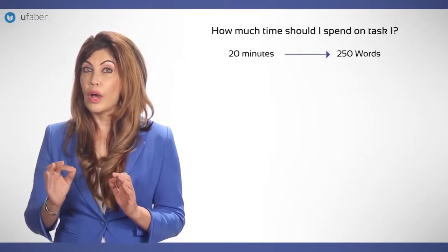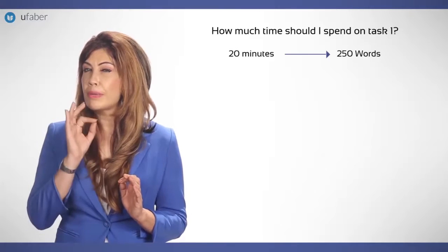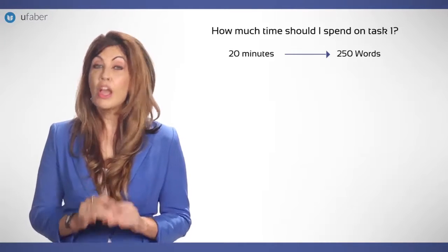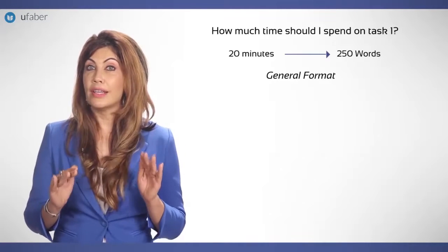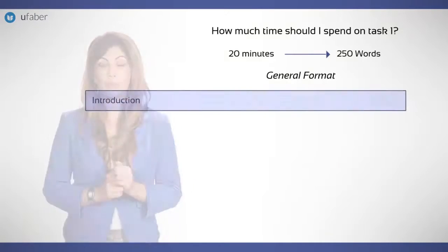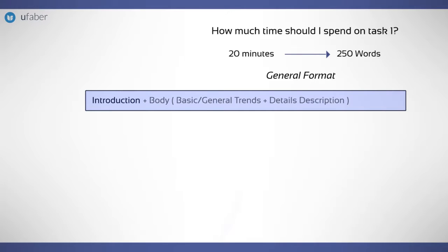The general format for writing Academic Writing Task 1 is as follows: introduction, followed by the body which includes the basic or general trends with important details mentioned, and finally a conclusion.